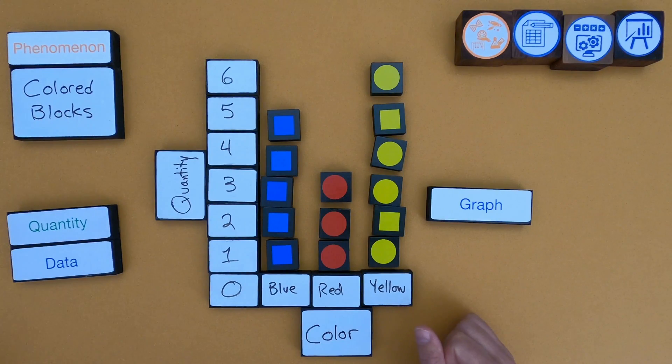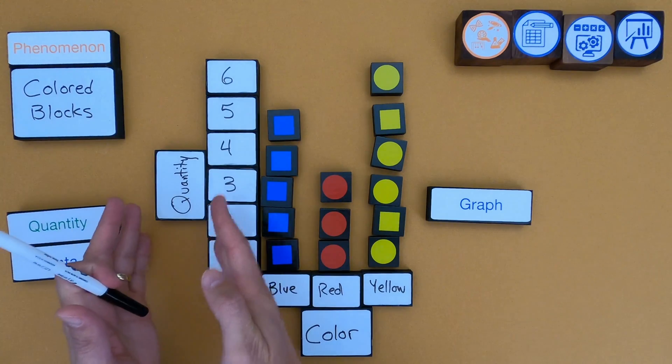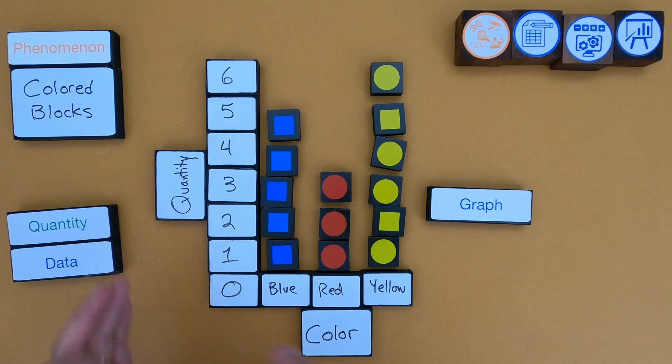So on a good graph, what you always have is both types of data on one graph. The one thing that I'm missing though is I'm missing a title. And a quick way to write a title is to just write what's on your y-axis or the vertical axis, and then what's on the x-axis. So let me write that.